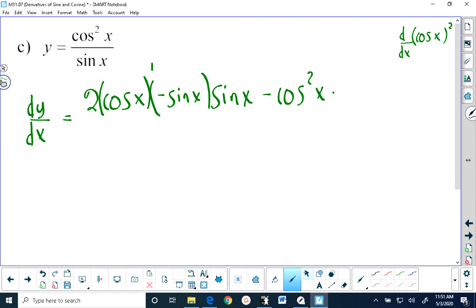All right, in today's lesson in example C, I make a horrible mistake. The derivative of sine of x, which is on the bottom, is cosine of x.